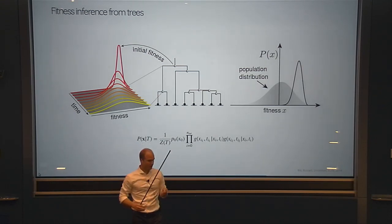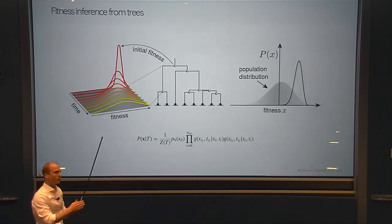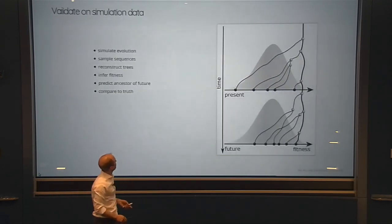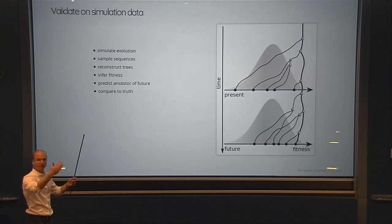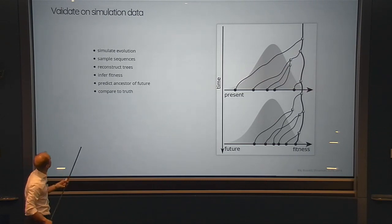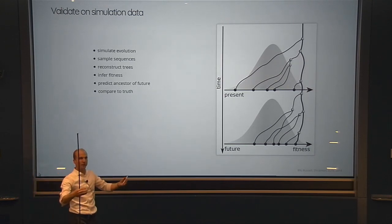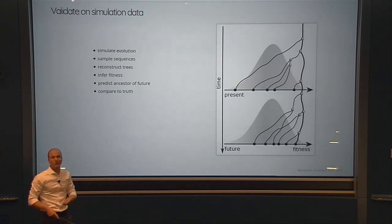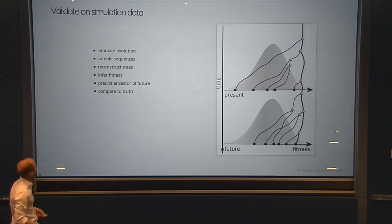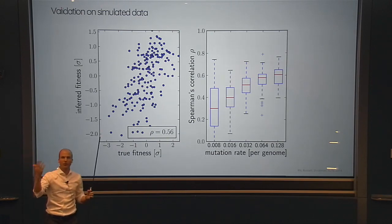Evaluating this marginal distribution gives a score for every virus tip of the tree, which we can use to rank them. We first tested this in simulations: we modeled virus genomes and fitness, let them mutate via random number generator, sampled sequences, erased all fitness information, used a standard tree reconstruction tool, applied the algorithm, and compared inferred fitness to the simulation's true fitness. A typical outcome is that we explain about a third of the variation — certainly enough to pick something in the high-fitness upper right corner.